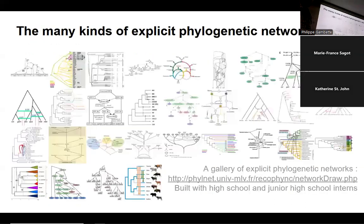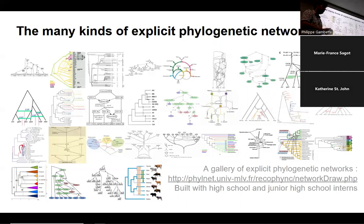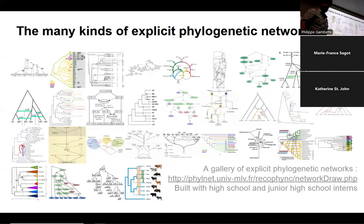This slide shows many different kinds of ways to draw networks that have appeared in the literature. This is extracted from a website with a gallery of those networks, built also with the help of high school students — a way to make them discover, for example, breadth-first search when they want to transform those networks into computer code. Breadth-first search is one of the basic algorithms learned when starting to work on networks, and it applies well to phylogenetic networks. We got a dataset of those networks where we can test our algorithms, published on Research Data and made available for everyone.